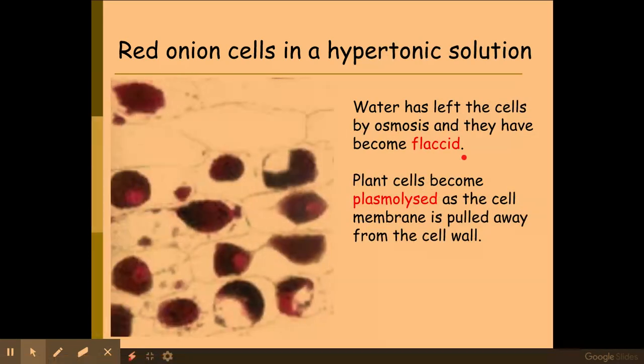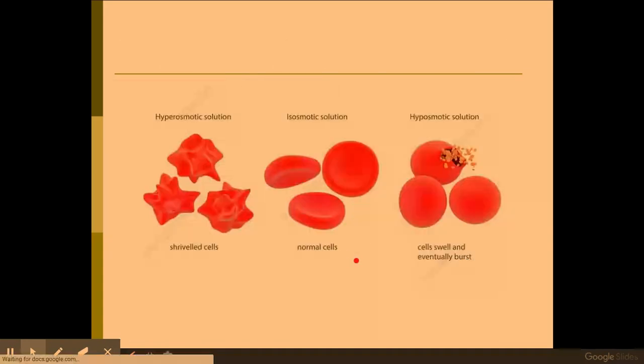Now, if I put that same plant cell into a lower water potential, this means that the water inside the vacuole will leave the plant cells by osmosis down the water potential gradient into the surrounding solution. And what will happen here is my cells become flaccid and eventually plasmolyzed. And plasmolyzed, as you can see in this image here, is where the cell membrane is actually pulled away from the cell wall.